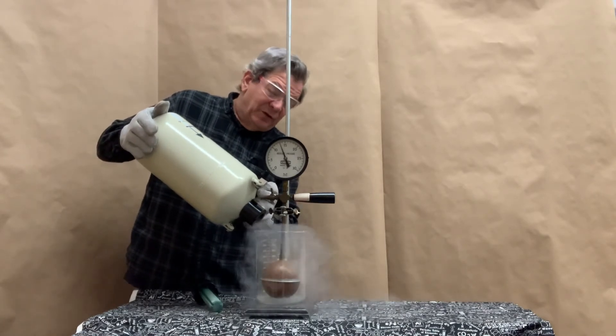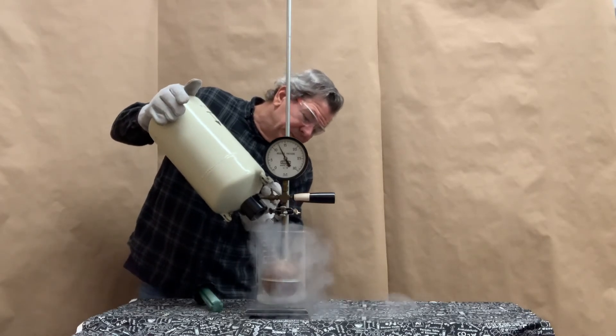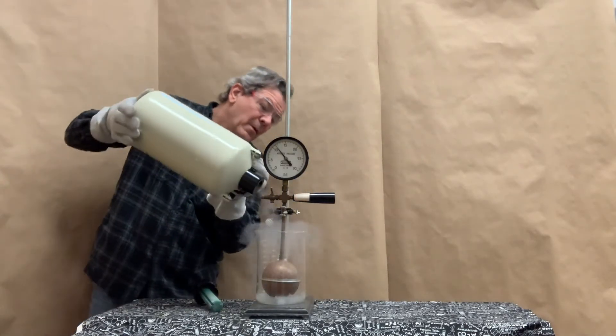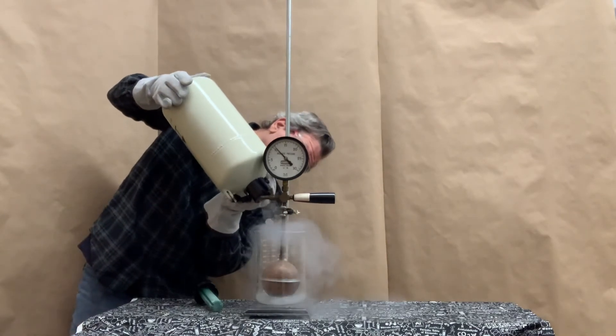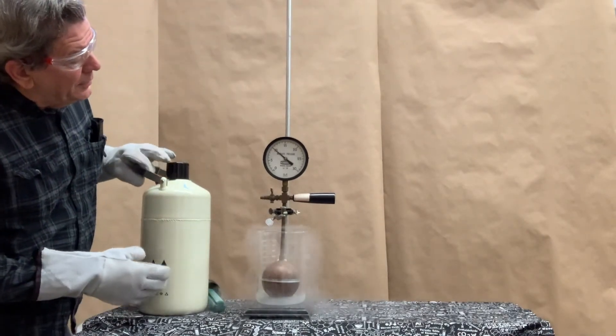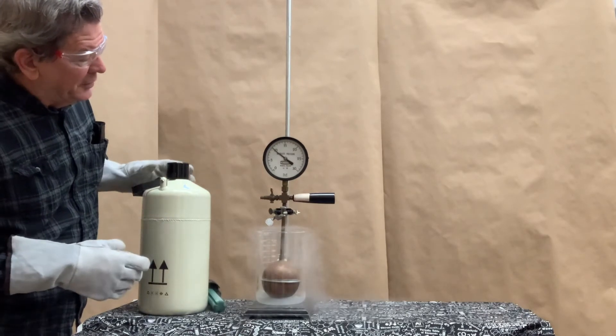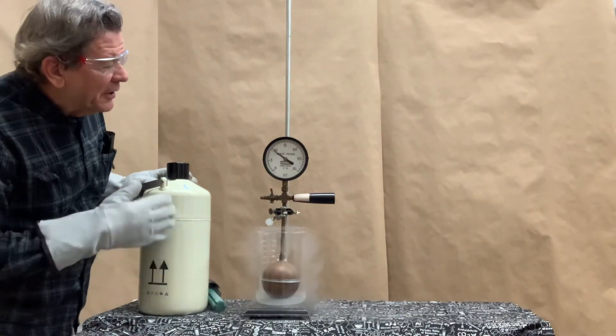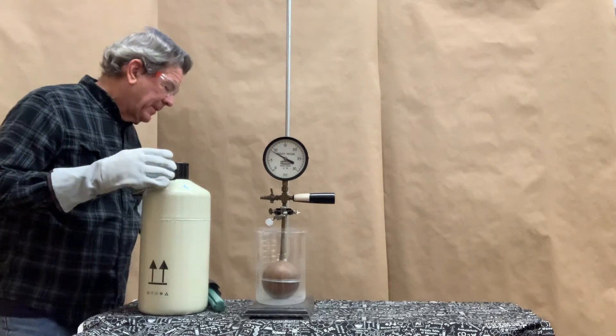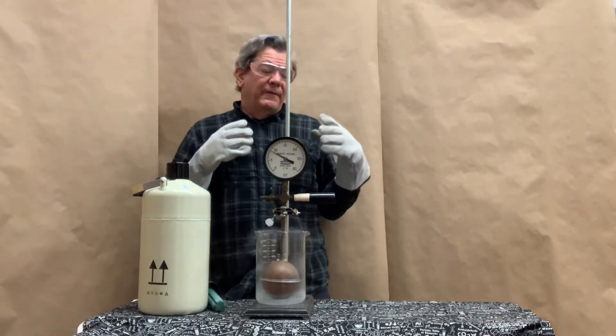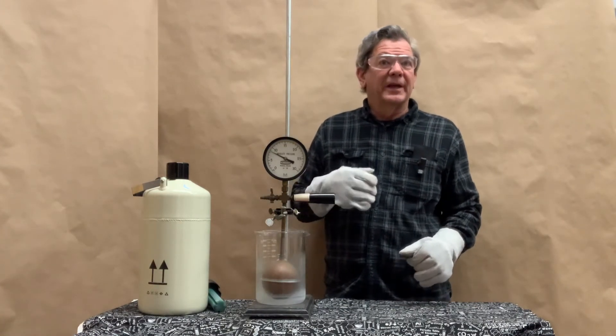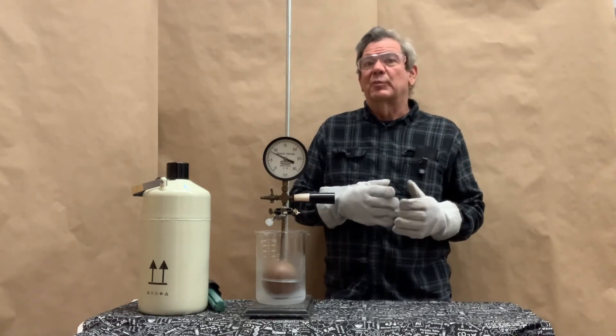You can see the pressure starting to decrease. We're down to 10 pounds per square inch. And it could probably go lower, but I ran out of liquid nitrogen. Now we're down to 9 pounds per square inch. So as you see, for a fixed number of moles and a fixed volume, if you decrease the temperature of a gas, the pressure decreases. That's direct proportionality.